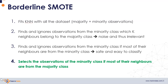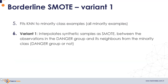What the algorithm does in particular is select observations from the minority class if most of their neighbors are from the majority class. These are the ones that will be used as templates to create the synthetic observations — the so-called danger group.